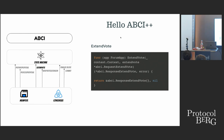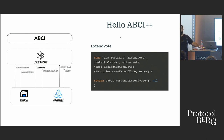ExtendVote is one of the most fascinating things. Right before consensus happens, right before the validators are agreeing on the proposal, the final call is made to the application asking: do you want to extend your vote, do you want to add something to the voting part? This gives the application an opportunity to add something, and this opens up a suite of applications like oracles or other places where you need to add a certain thing at the last minute to the consensus engine. We'll see how this is done in the application walkthrough.